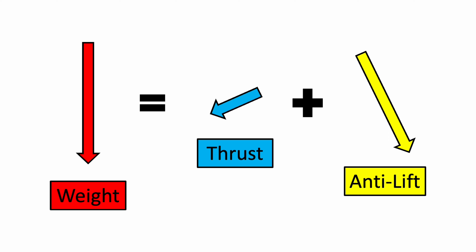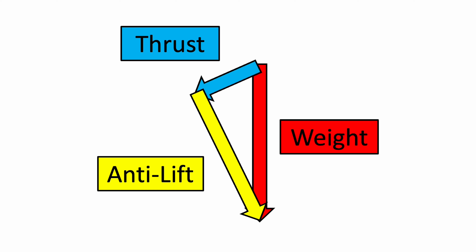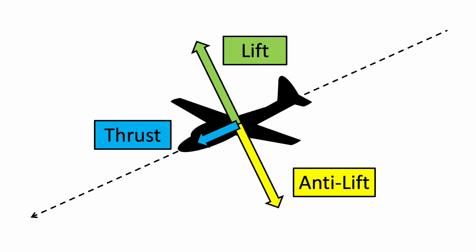Next, we're going to break the weight force apart and replace it with two other forces. One of the new forces, shown in blue, will act in the direction of flight — this force is called thrust. The other new force, shown in yellow, will act at a right angle to the flight direction and in the opposite direction of the lift force — we'll refer to this as anti-lift. We can tell the combination of thrust and anti-lift is equivalent to the weight force because, when you connect the thrust and anti-lift vectors tip to tail, they start and end in the same place as the weight vector.